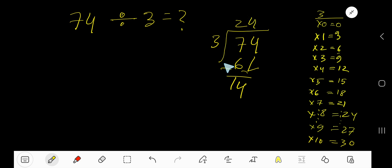...is 12. Subtract, you are getting 2. So our answer is 24 remainder 2. If you want to write your answer in decimal form, then take your decimal, add number of zeros, bring down the first zero.